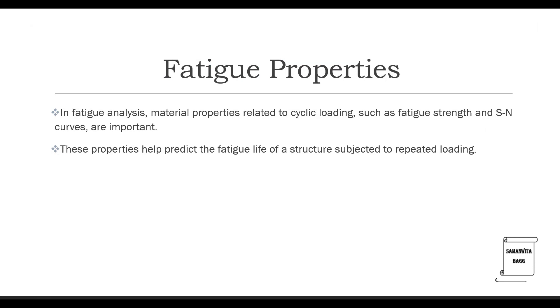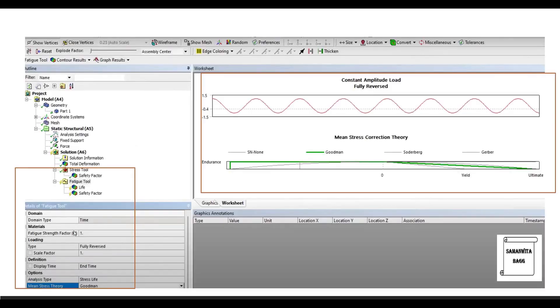Next comes fatigue properties. In fatigue analysis, material properties related to cyclic loading, such as fatigue strength and SN curves are important. These properties help predict the fatigue life of a structure subjected to repeated loading. As you can see here, this is again a screenshot of an analysis. This is a fatigue analysis which I have done.